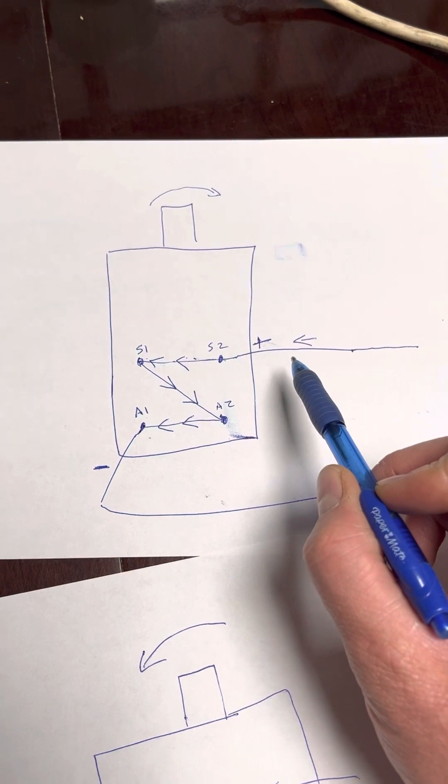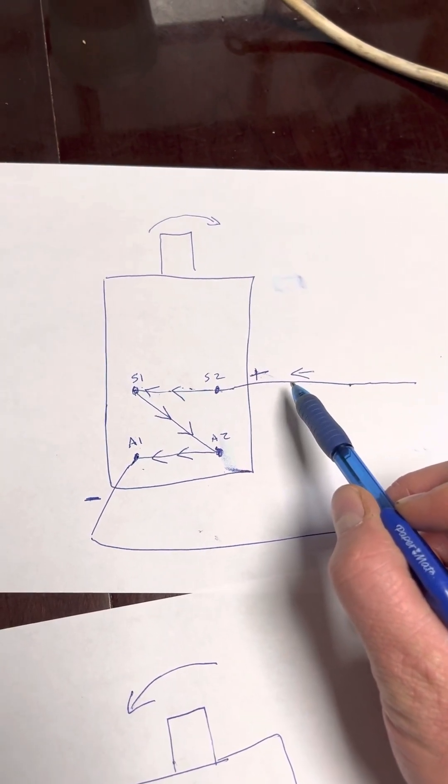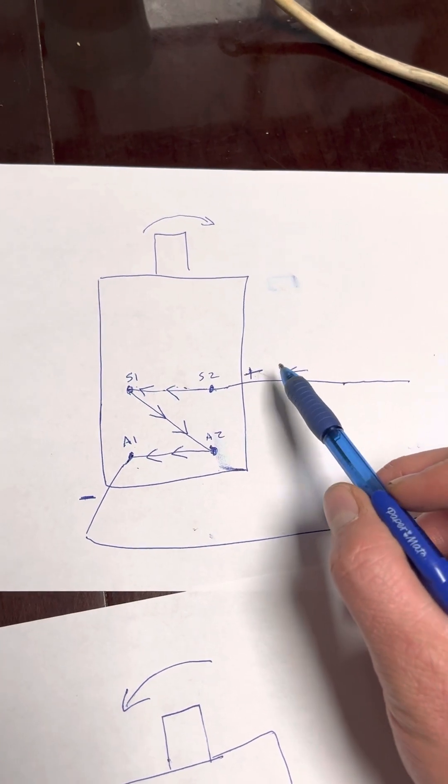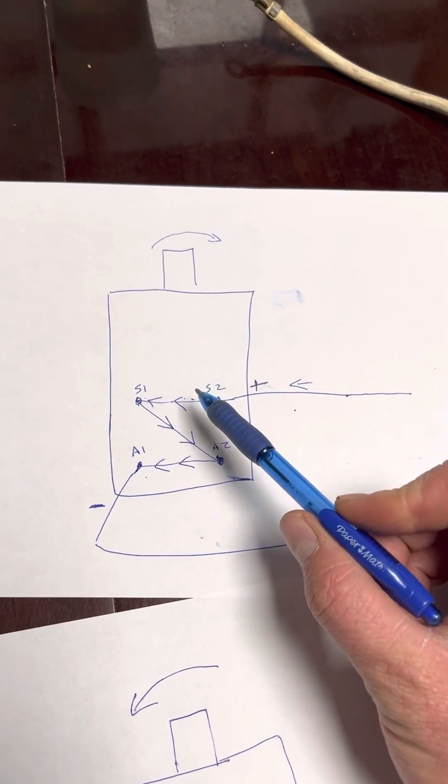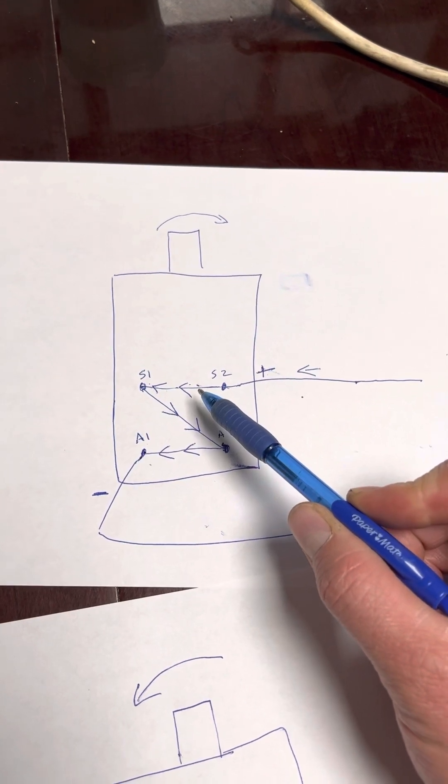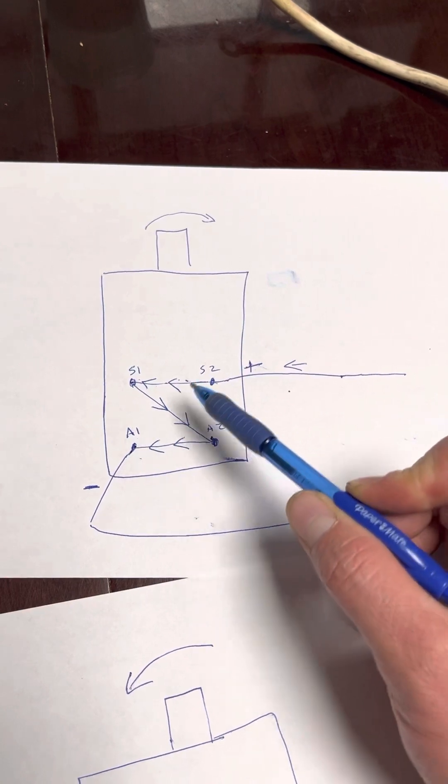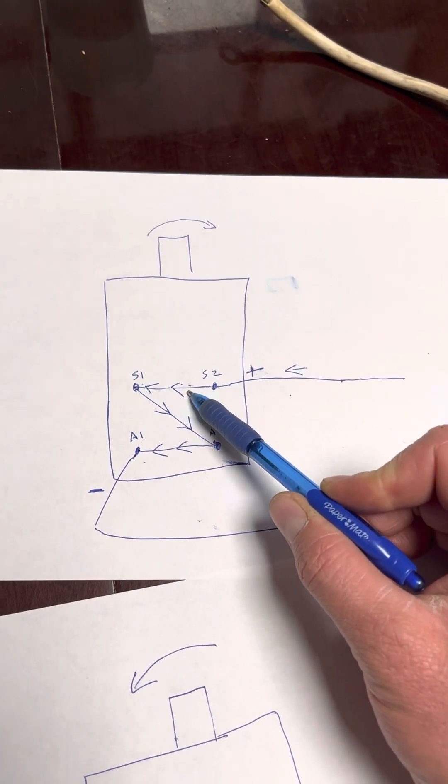And it would not change the direction that the motor is spinning. And the reason is because you have to change not the polarity of the whole system. You have to change the polarity of the fields.